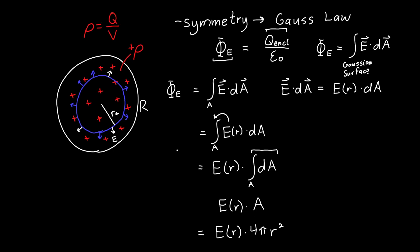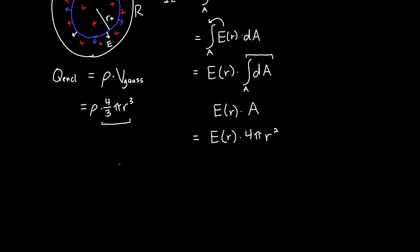Now we need the charge enclosed. It's not the charge of the entire sphere because our Gaussian surface only covers part of it. So the enclosed charge is the charge density rho times the volume of our Gaussian surface, which is rho times (4/3)π little r cubed — the volume of a sphere of radius little r.